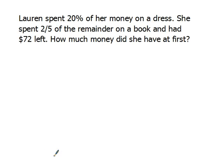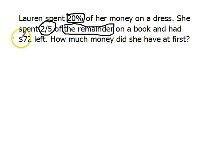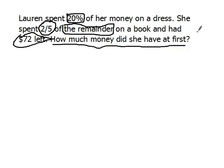We're going to solve a more complicated problem. Lauren spent 20% of her money on a dress. She spent two-fifths of the remainder on a book and had $72 left. How much money did she have at first? She spent 20% — which can be looked at as two-tenths — then two-fifths of the remainder, and had $72 left. We need to work backwards. She had two transactions: she bought a dress and then a book. With two transactions, I think we're going to need two bars.